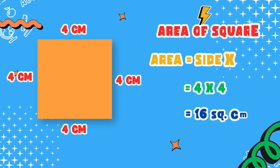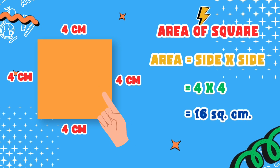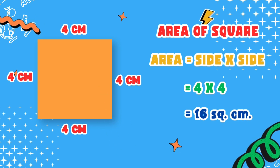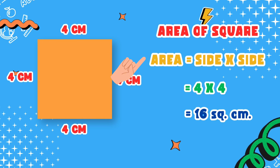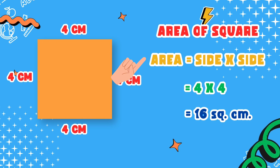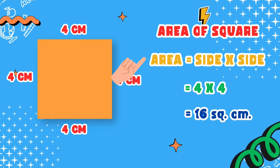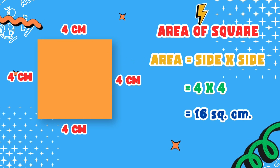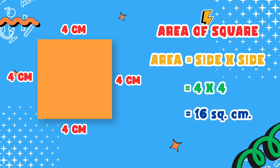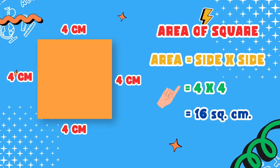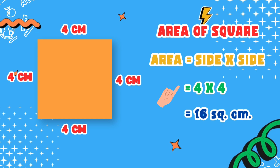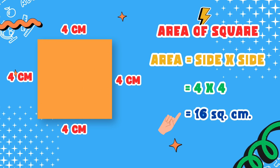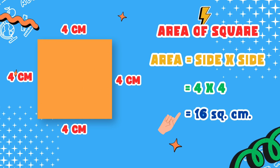A square has four equal sides. To find its area, just multiply one side by itself. So, if one side is 4 centimeters, 4 times 4 equals 16 square centimeters.